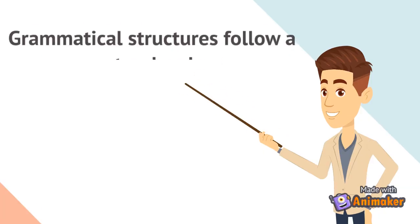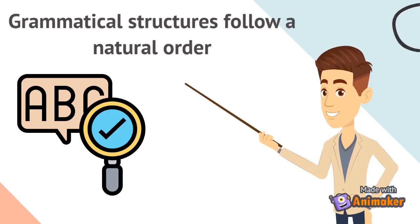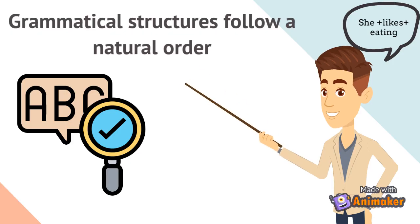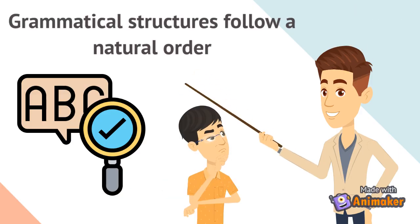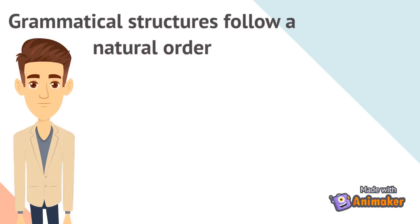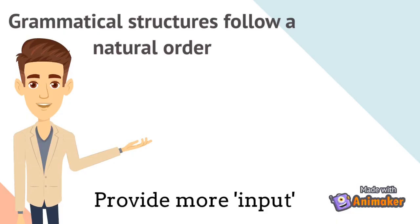The natural order hypothesis suggests that the acquisition of grammatical structures follows a natural order, which is predictable. For a given language, some grammatical structures tend to be acquired early, while others late. This hypothesis also accounts for students' mistakes and errors. That is, students make mistakes when the structure used has not been completely acquired. However, students can use their learned competence to modify their production. So, the best way to correct students' mistakes is to provide more input containing the structure in question.